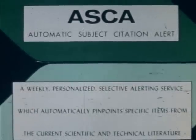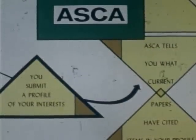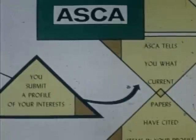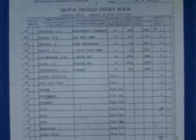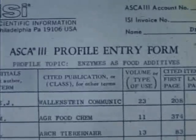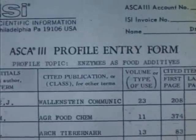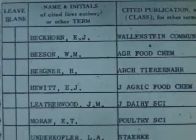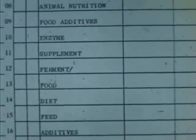ASCA is a computer-based system for the selective dissemination of information to individual scientists. In order to provide this kind of service to individuals, it is necessary for you to construct a profile of your individual interests. Here is an ASCA profile entry form. In this particular case, the profile topic is enzymes as food additives. The subscriber listed a group of specific papers on this topic, then listed a number of key words, word stems, and phrases.